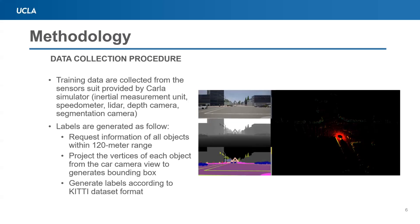In this section, we will describe in detail our data generation method. First, the training data are collected from multiple sensors provided by CARLA such as inertial measurement unit, speedometer, lidar, depth camera, and segmentation camera.